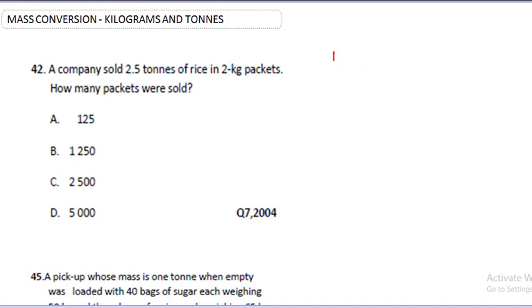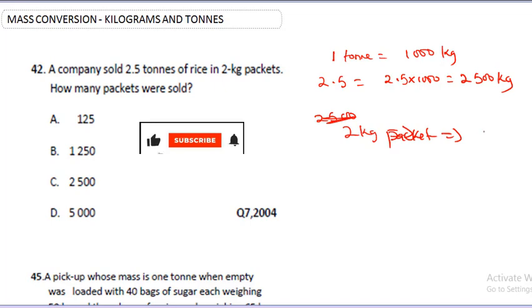A company sold 2.5 tons of rice in 2 kg packets. I want you to understand that 1 ton equals 1000 kg. Now 2.5 will be 2.5 times 1000, and that will give you 2,500 kg. Now having established this fact, if 2,500 kg in 2 kg packets, then one packet will be - I will now do 2,500 divided by 2, and that's going to give me 1250.